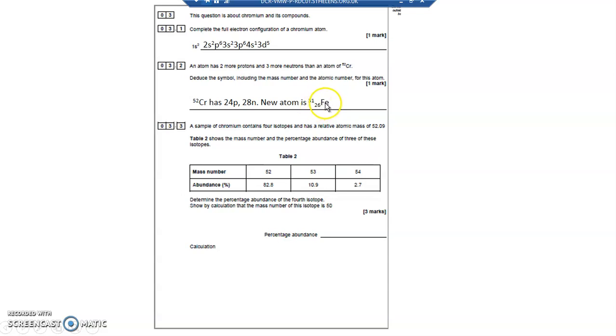Now the bottom number, the atomic number, determines what atom it is. Now if we look up 26, that's Fe.